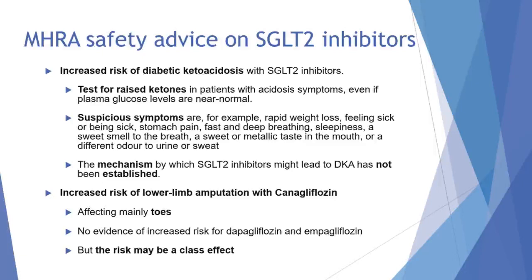We need to test for raised ketones in patients with acidosis symptoms even if plasma glucose levels are near normal. Suspicious symptoms include rapid weight loss, feeling or being sick, stomach pains, fast and deep breathing, sleepiness, a sweet smell to the breath, a sweet or metallic taste in the mouth, or a different odour to urine or sweat. The mechanism by which SGLT2 inhibitors might lead to diabetic ketoacidosis has not been established.